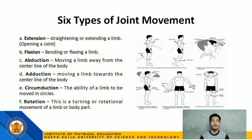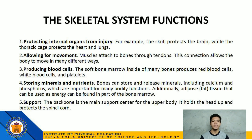Speaking of joints, there are 6 types of joint movements: Extension — straightening or extending a limb, or opening a joint; Flexion — bending or flexing a limb; Abduction — moving a limb away from the center line of the body; Adduction — moving a limb towards the center line of the body; Circumduction — the ability of a limb to be moved in circles; and Rotation — a turning or rotational movement of a limb or body part. The functions of the skeletal system are to protect internal organs from injury, allow movement, produce blood cells, store minerals and nutrients, and to serve as a support to our body.